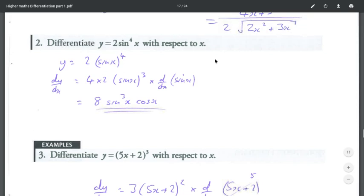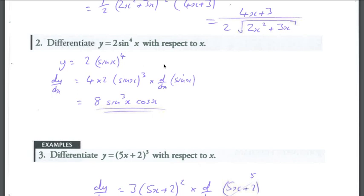Once we've written it in that format, it will be power to the front, reduce the power by 1, multiplied by the derivative of the bracket. So we're gonna have 4 times 2 bracket cubed multiplied by the derivative of the bracket. Well, 4 times 2 is 8 sine cubed x multiplied by the derivative of sine x which is cosine x. So 8 sine cubed x cos x.